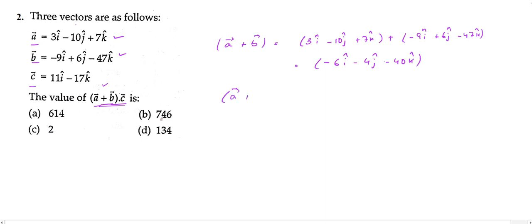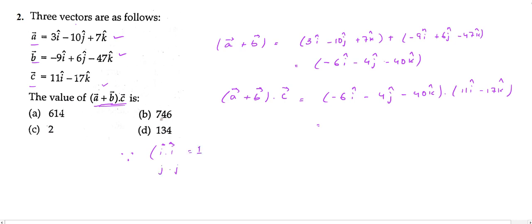Now we need to find (a + b) · c, which is (−6i − 4j − 40k) dot product c, where c = 11i − 17k with no j component. For dot product, the rules are: i·i = j·j = k·k = 1, and i·j = i·k = j·k = 0.